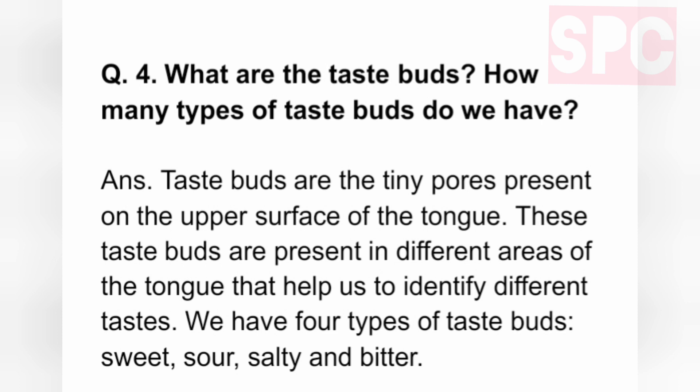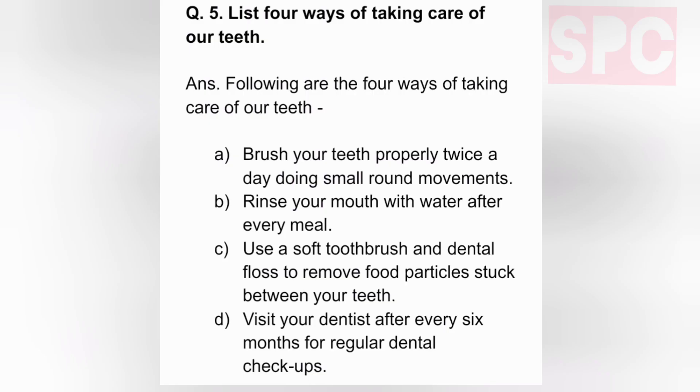Question 4: What are taste buds? How many types do we have? Answer: Taste buds are the tiny pores present on the upper surface of the tongue, grouped in different areas to help identify different tastes. We have 4 types of taste buds: sweet, sour, salty, and bitter. Question 5: List 4 ways of taking care of our teeth. Answer: (a) Brush teeth properly twice a day with small round movements. (b) Rinse mouth with water after every meal.